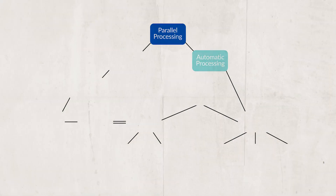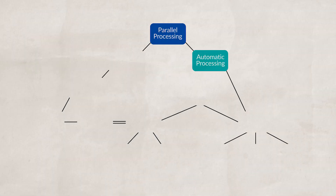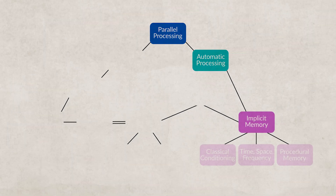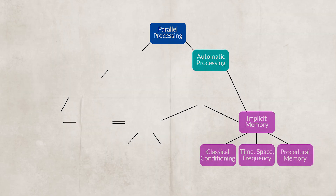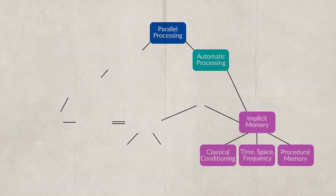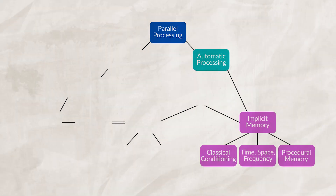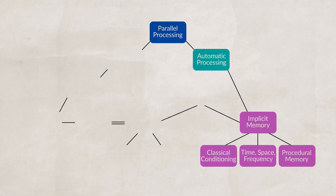On the right side, we have our automatic processing, which is our implicit memory. Automatic processing is handled in the cerebellum and basal ganglia and becomes implicit memory. For example, when I say 'Ba-da-ba-ba-ba' — did you say 'I'm loving it'? I'm guessing you didn't purposely memorize that slogan, but it has become an implicit memory stored in your long-term memory.